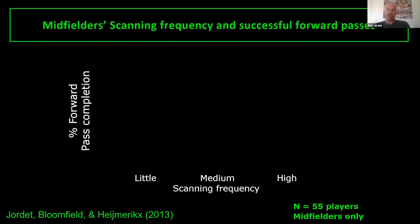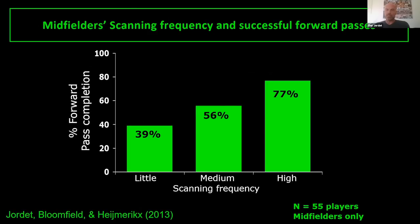What are we finding? We do find a relationship between scanning frequency and performance. This slide shows that in a Premier League example, players who scan little hit around 40% of their forward passes, while players who scan a lot hit almost twice as many. This relationship isn't always as large as shown here — there are many nuances: different positions, contexts, situations, and phases of the game — but we always find a tendency in this direction, even if sometimes small.